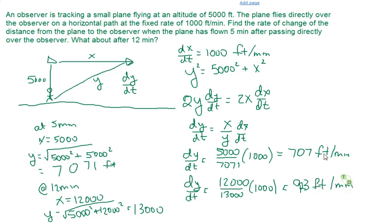So as the time increases, our rate of change of how fast the airplane is moving away from us is increasing. It would be approaching about 1,000 feet per minute as time goes towards infinity. I hope this helps.